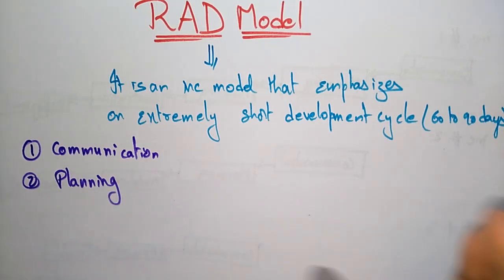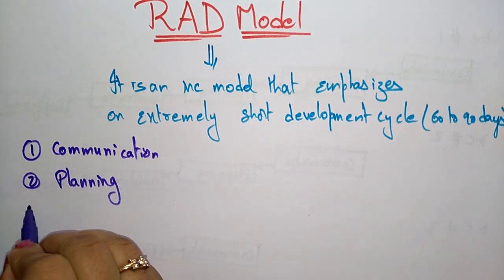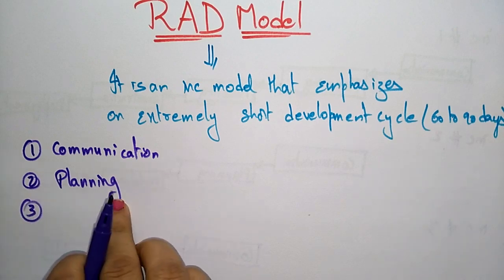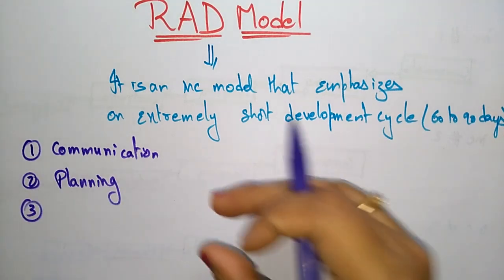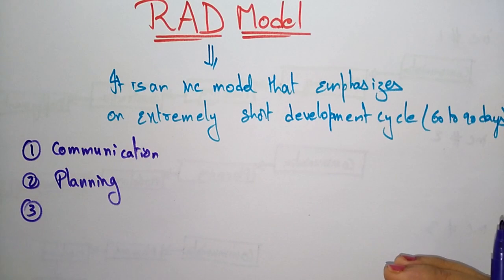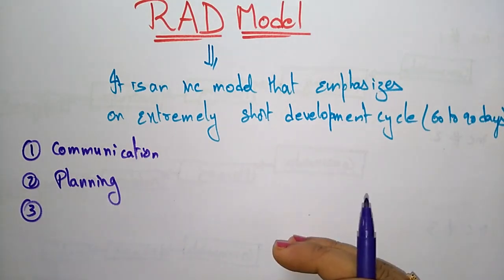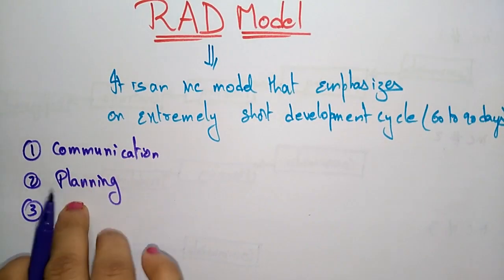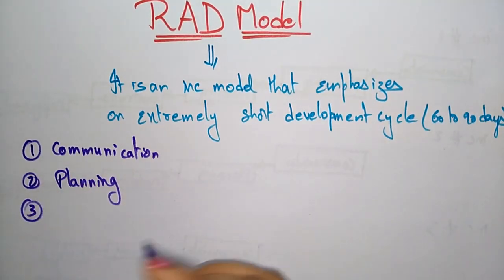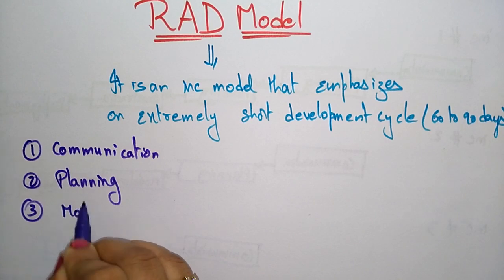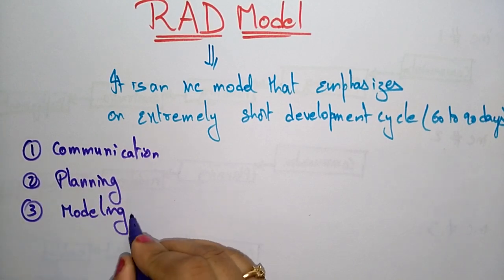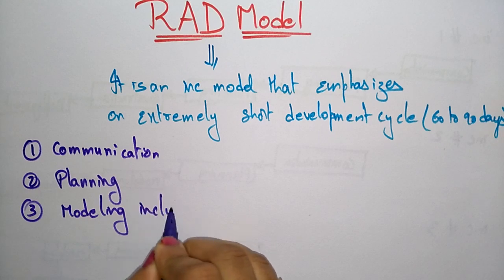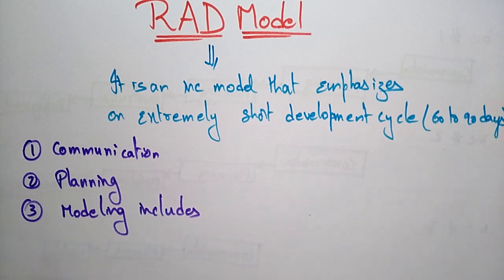After taking the specifications and requirements, the developer is ready for planning the project. The next stage is Planning. Planning includes all the documentation — everything the user is asking is placed in the form of documentation. Planning covers from start to end: the size of the project, the resources being used, the maintenance cost, the error cost — everything will be present in this planning section.